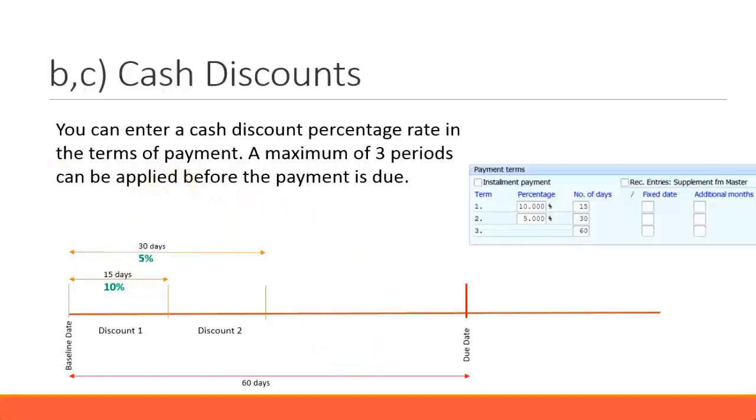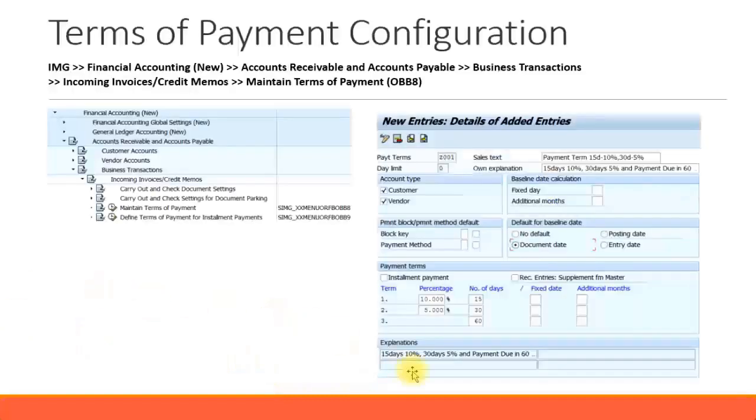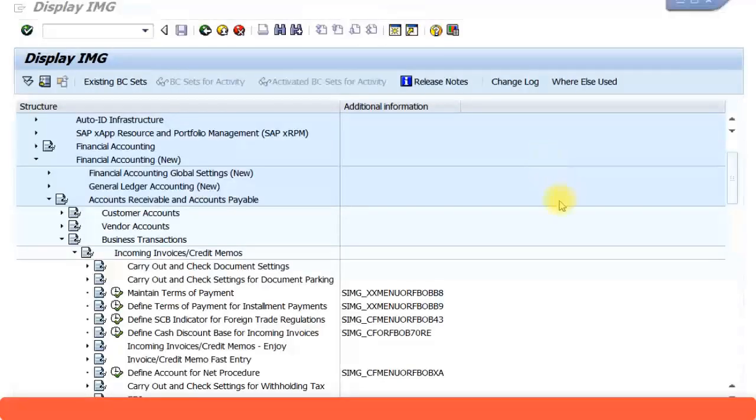Now let's look at the payment term configuration for you to have a better understanding. The SAP configuration path for payment terms is financial accounting, accounts receivable and accounts payable. Now it's under accounts receivable and accounts payable because payment terms are related to customers and vendors.